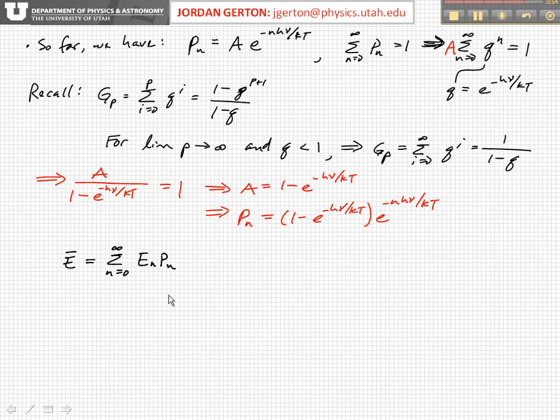Now to calculate the average energy in a particular mode, then what we need to do is multiply the energy of that mode times the probability of that mode basically being populated.